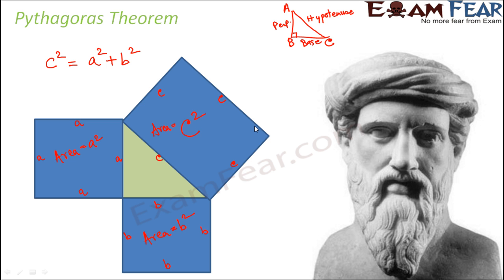You might be wondering how he was able to find such a complicated relation — we started with a right-angled triangle, drew squares on each side, and derived this relation. This is not exactly how it was derived; this theorem can be proved in a number of ways. Here we will look at a proof of the Pythagoras theorem by rearrangement, and we will see how we can rearrange triangles to prove that C² = A² + B², that is, hypotenuse squared equals the square of the base plus the square of the perpendicular.